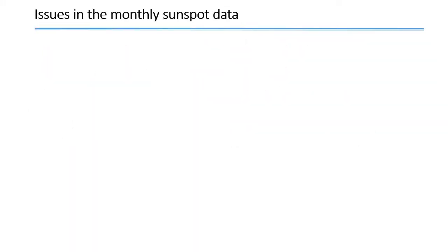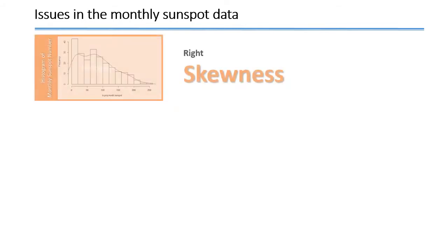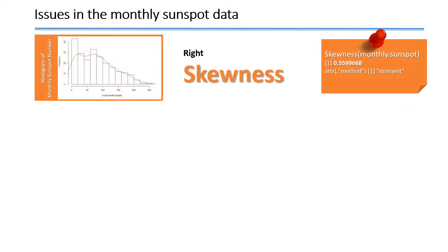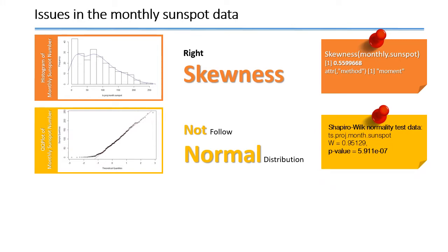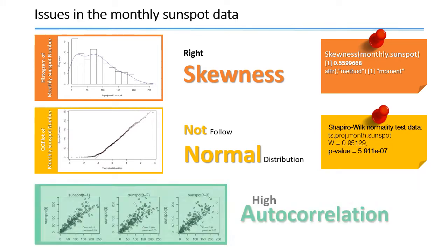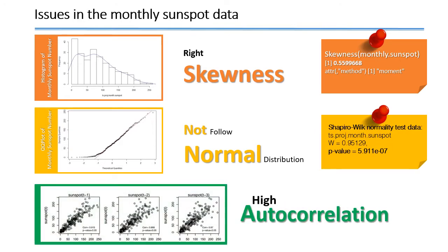By investigating further through some data tests, we found that there are some issues in the monthly sunspot data. First, it has right skewness. Second, the data is not normal. Third, there is high autocorrelation.